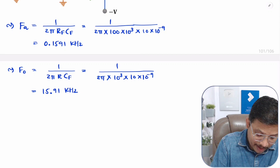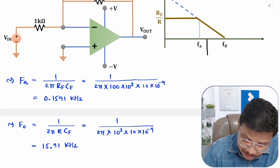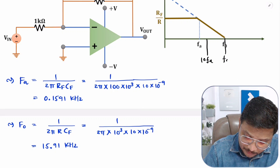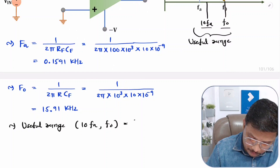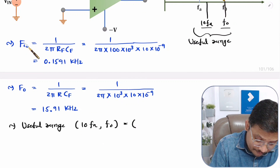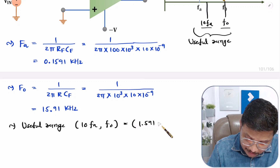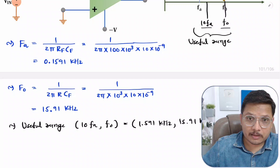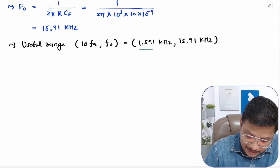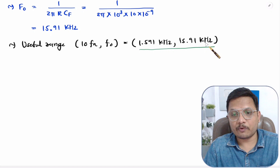Now we have the values of Fa and F0. The useful range of frequency is from 10Fa to F0. So 10Fa = 0.1591 × 10 = 1.591 kilohertz, and F0 = 15.91 kilohertz. Therefore, the useful range of frequency for the given circuit is 1.591 kilohertz to 15.91 kilohertz.